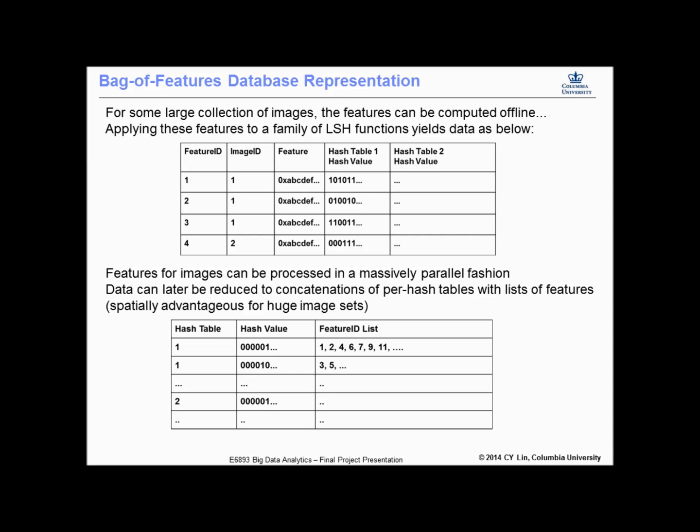This is really all the data we need to do a similarity search, but it isn't really in the optimal format. Instead, what we really want is to split up and invert this big table, so to speak, such that features that hash to the same value are grouped together in a list. This can be thought of as a sort of vocabulary, since similar features are described by the same word. This representation allows us to drastically reduce the search space when doing image matching queries on the database.